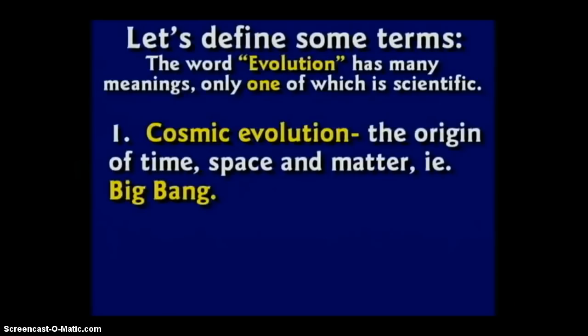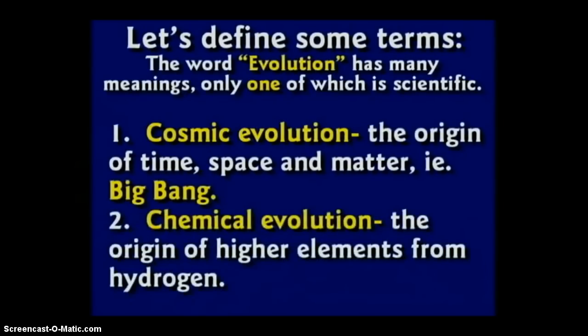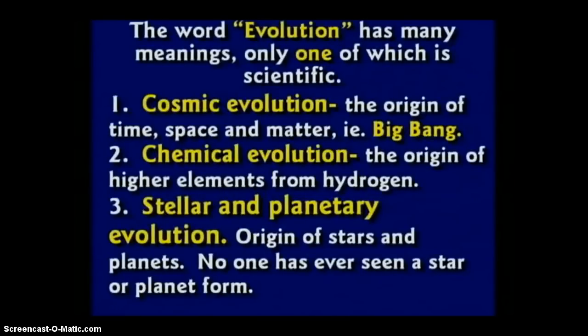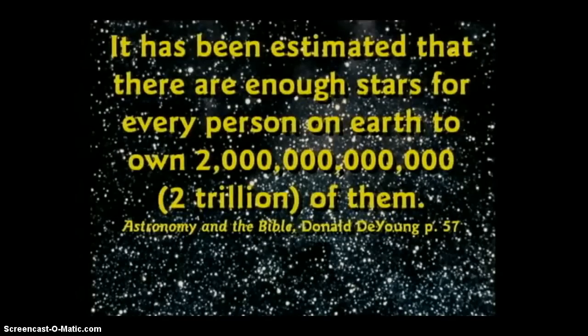'Then we'd have to have chemical evolution — the Big Bang supposedly made hydrogen, how did we get 92 elements plus the synthetic ones? How did the chemicals evolve? Thirdly, we'd have to have stellar and planetary evolution — the stars would have to evolve. There are an awful lot of stars out there, but nobody's ever seen one form. We've never seen one star forming; we see them blow up from time to time — that's called a nova or a supernova. One professor told me that if 20 stars explode near each other it'll produce enough energy to make a brand new star. I said, well, you've got to lose 20 to gain one — you ought to run for Congress.'